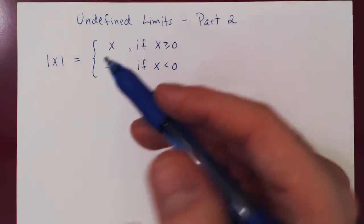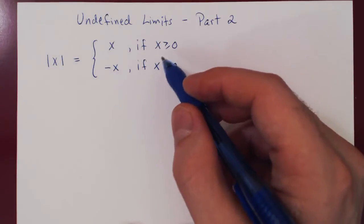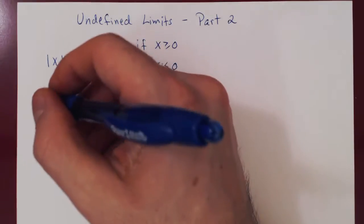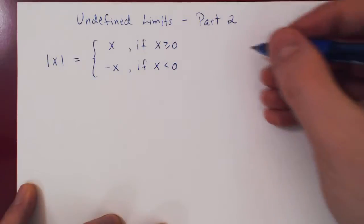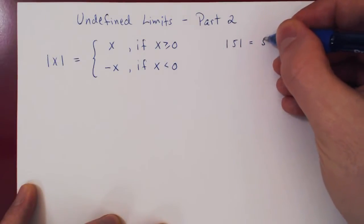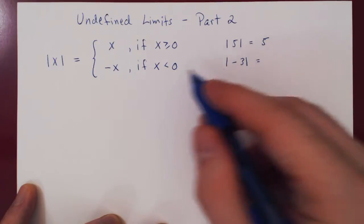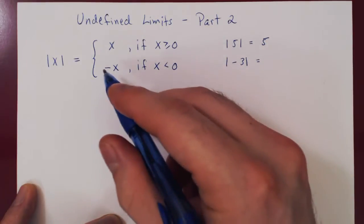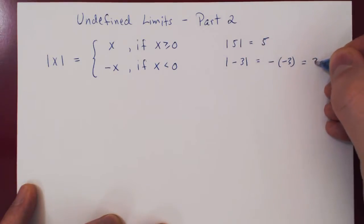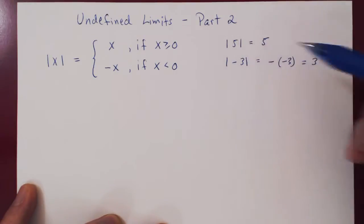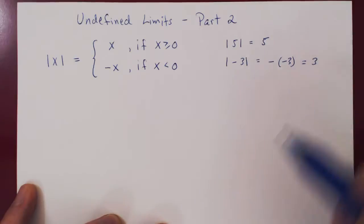What does the absolute value really do? If x is positive or zero, the function returns x. If x is negative, it returns its negative. So all the absolute value function does is it kills, if it exists, a negative sign. For example, the absolute value of 5 is simply 5. The absolute value of negative 3 — since x is negative — returns negative of negative 3, which gives us positive 3. So it just removes negative signs.